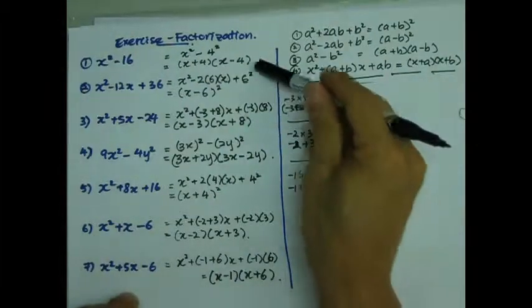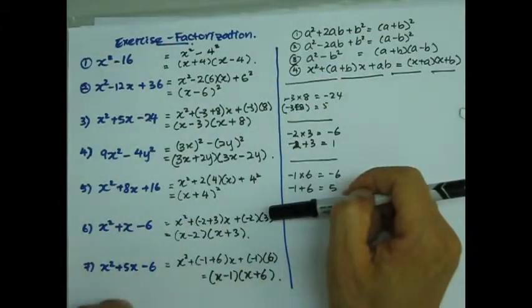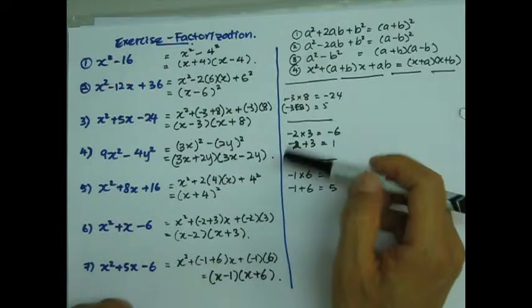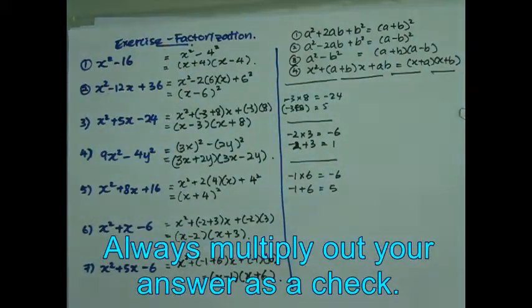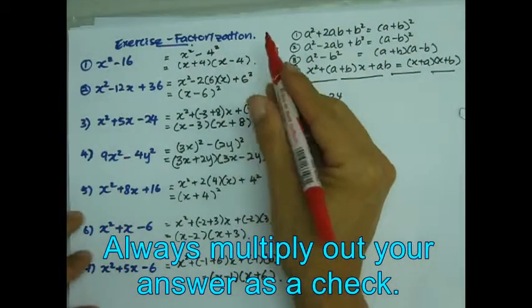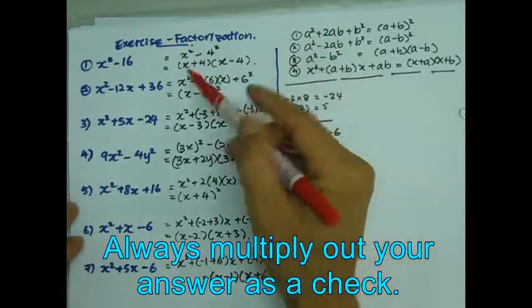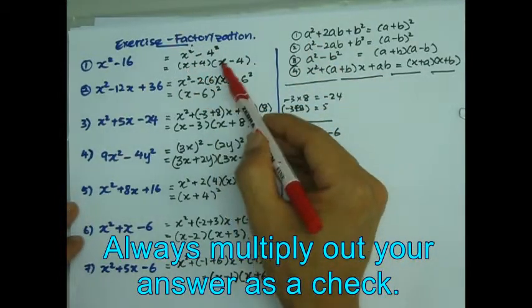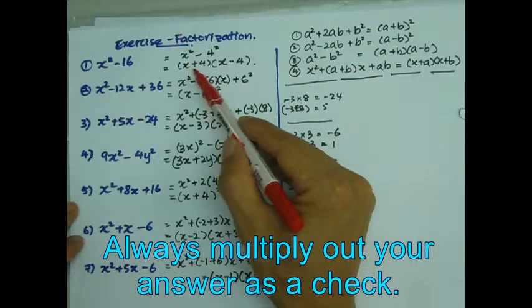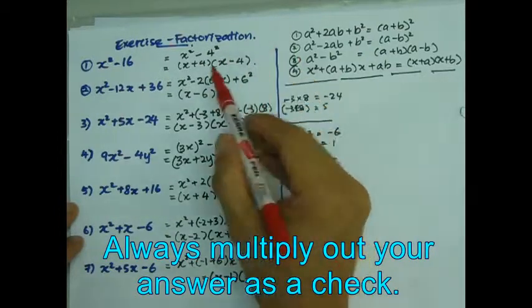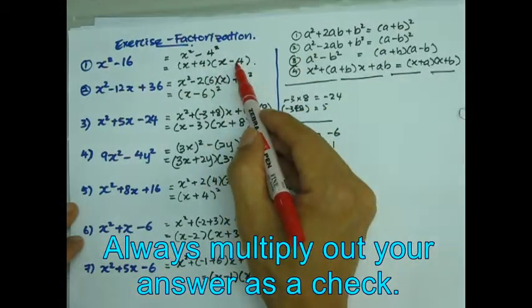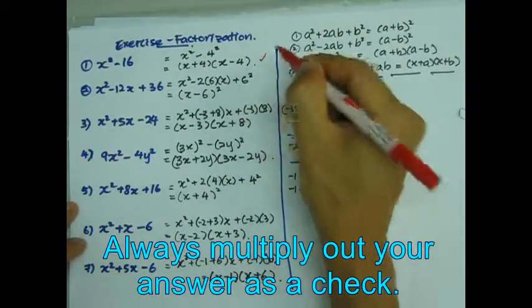Now, when you've done all this factorization, always check your answer to see whether you actually get the right answer. Because a lot of students, when they got the factorization, they are very happy and they go to the next question without checking. So let's check. x times x is x squared, x times negative 4 is negative 4x, this is 4x. So negative 4x and 4x is 0. That's good. And plus 4 times negative 4 is negative 16. So this is alright.